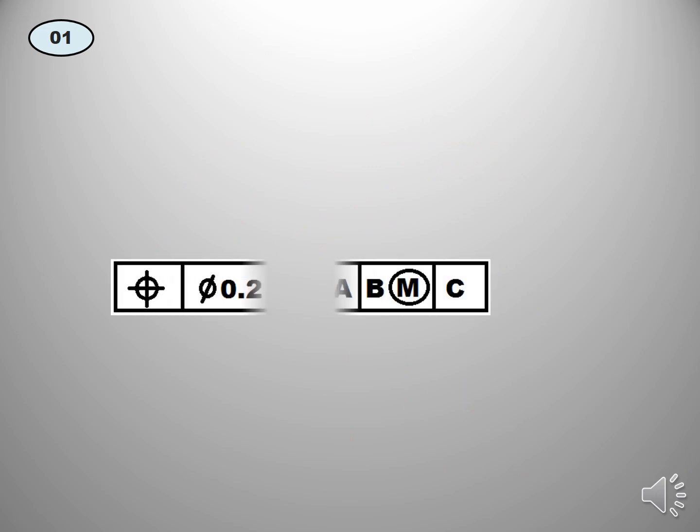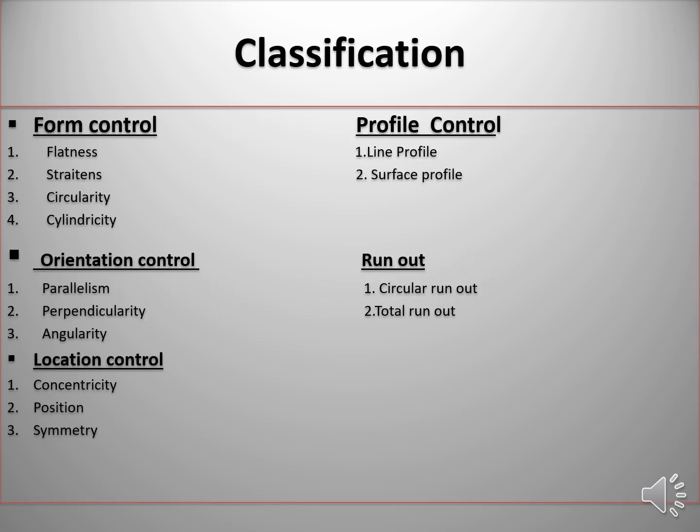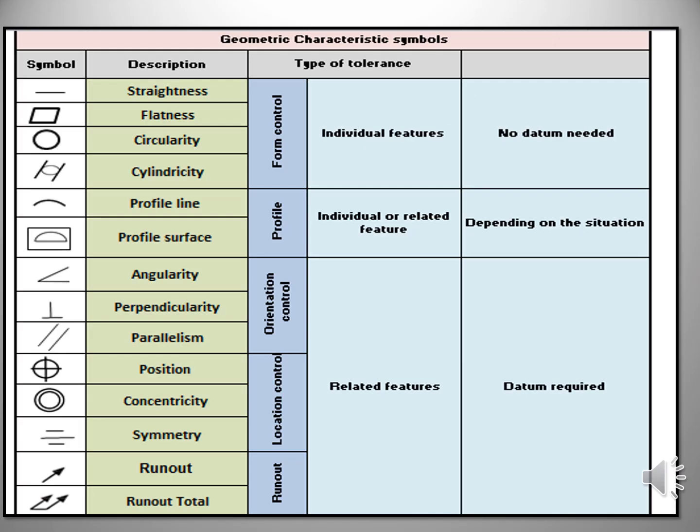First, we can discuss type of geometrical tolerances characteristics and its symbol, also classification. You can see geometrical tolerances and its symbols, also its classifications. The first classification is form control. Straightness, flatness and circularity, cylindricity. This comes under form control.